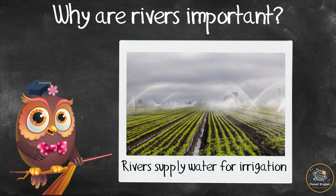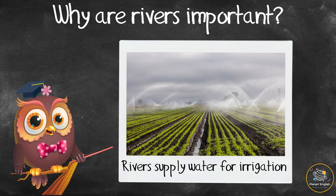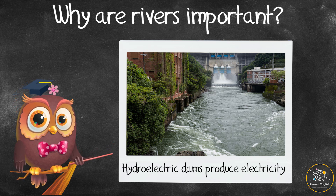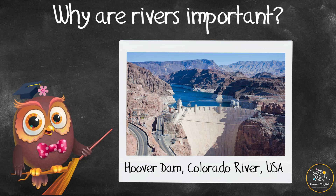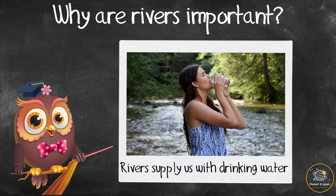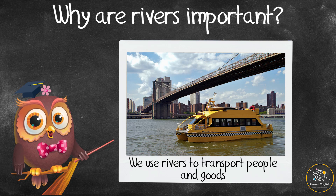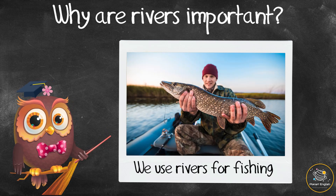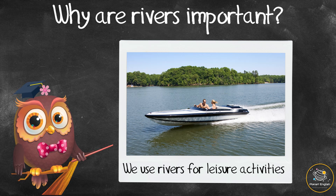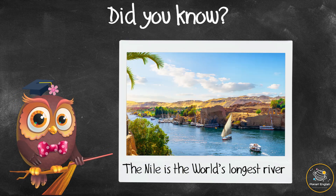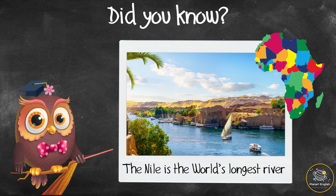Rivers supply water for irrigation, which is the watering of farmland in order to grow food. In many places, hydroelectric dams use the powerful flow of rivers to produce electricity, like the Hoover Dam on the Colorado River. We also use rivers as a supply of drinking water, for the transportation of people and goods, for fishing as a food source, and for leisure activities like swimming and boating.